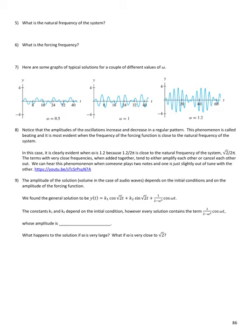We found the general solution to be y(t) = k1·cos(√2t) + k2·sin(√2t) + 1/(2 − ω²)·cos(ωt). The constants k1 and k2 depend on the initial conditions, but every solution contains the term 1/(2 − ω²)·cos(ωt), whose amplitude is 1/(2 − ω²).